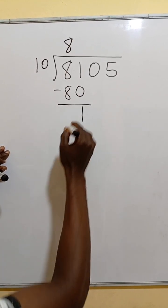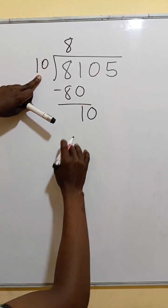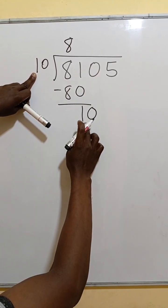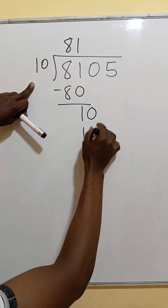When we subtract we get 1. 10 cannot divide 1, so we drop down the 0. 10 goes into 10, 1 times. 1 times 10 is still 10.